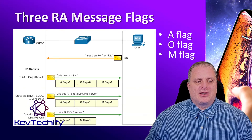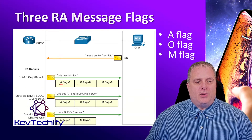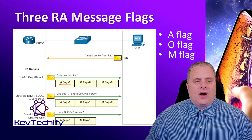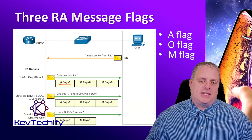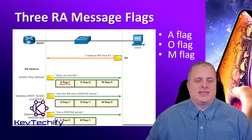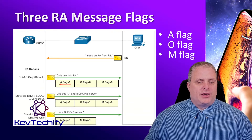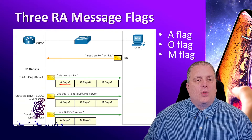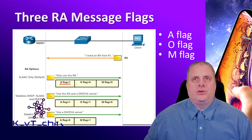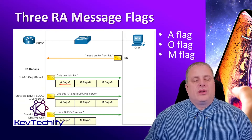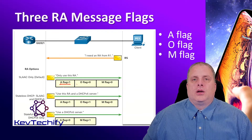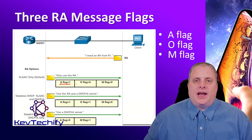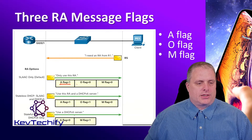If just the A flag is set — set means a 1, not set means 0 — and all the rest are not set, we're going to use stateless address auto-configuration. We're going to generate our own global unicast address for IPv6.